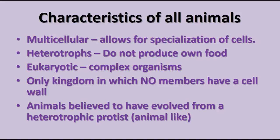Animals are also eukaryotic, meaning they are complex organisms with complex cells and numerous organelles within their cells that do specialized jobs. The animal kingdom is the only kingdom which has no members with a cell wall. We believe animals evolved from a heterotrophic, animal-like protist ancestor. What that looked like and exactly when it happened is difficult to determine, but that is what is indicated by the fossil record and the DNA record.